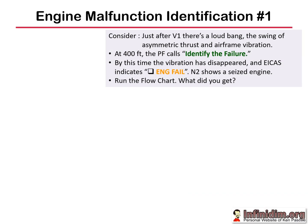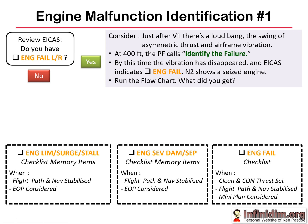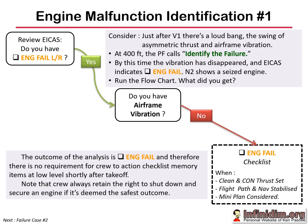Let's try this with some actual scenarios. Scenario 1: just after V1, there's a loud bang, swing of asymmetric thrust, and airframe vibration. At 400 feet the pilot flying calls 'identify the failure.' By this time the vibration has disappeared, ICAS indicates engine fail, and N2 shows a seized engine. Run the flowchart: do you have engine fail? Yes. Do you have airframe vibration? No. We're going to run the engine fail checklist - once the airplane's clean, continuous thrust is set, flight path and nav sorted, maybe a mini plan actioned. No requirement to run memory items at low altitude.